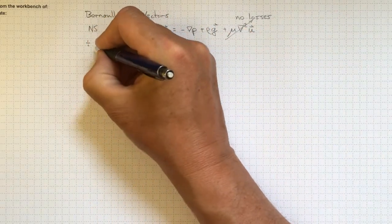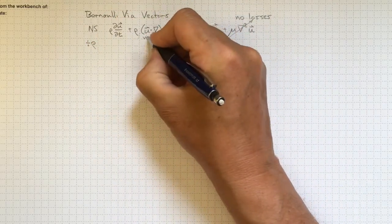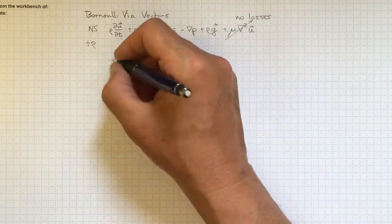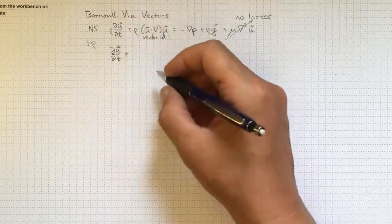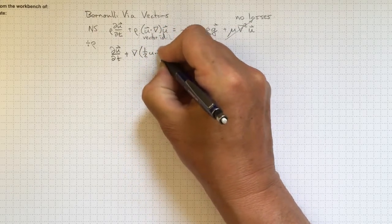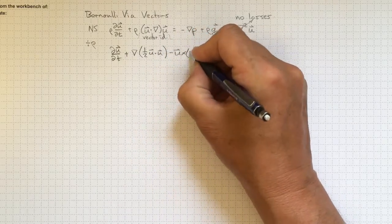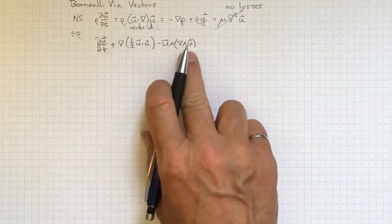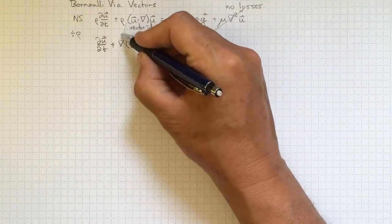If we divide by density to simplify, and expand this term in here by a vector identity, which you can find in just about any mathematics textbook, then we'll wind up with di u di t plus, and this is where the expansion comes in, grad a half u dot u, both of those are vectors, minus u cross grad cross u. Now this may not make a lot of physical sense to look at, but it's mathematically correct by this vector identity that we've used for the expansion.